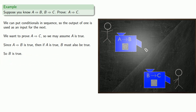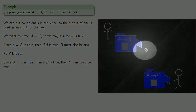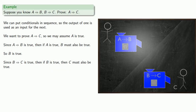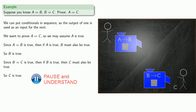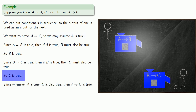We know B is true. We also know that if B then C is true, and since B is true, C must also be true. If we drop B into this conditional machine, we get C as output, so C is true. Putting this all together: any time A is true, C is also true — so the conditional if A then C is true.